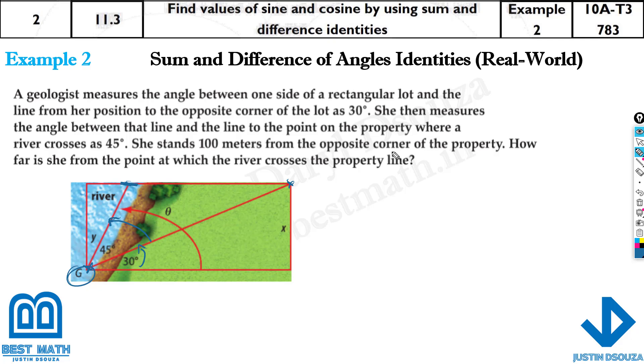She stands 100 meters from the opposite corner of the property. So from here, the opposite corners, right, these are corners, vertices, edges. So this distance is given to be 100. Okay, we know so much.